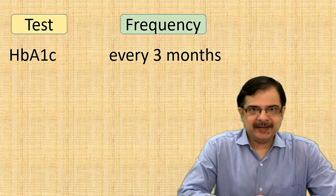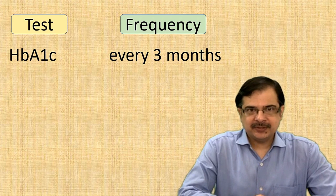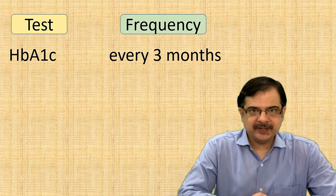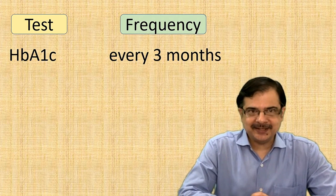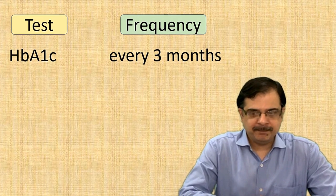First test is HbA1c that should be done every three months. Why is this test important? HbA1c is a three months average of sugars, while tests like fasting and postprandial can vary on a day-to-day basis. So this is an important test and it will help the physician to decide the best treatment for a particular patient.